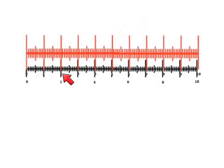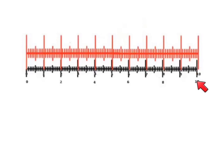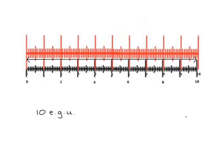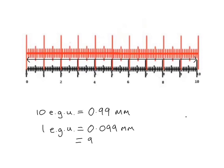You can use the small or large divisions, but here some aren't quite in line. We have to go all the way to the end until we see that the 10 mark on our eyepiece graticule lines up with a division on our stage micrometer. That means 10 eyepiece graticule units is worth 0.99 millimetres. From that we can work out what one eyepiece graticule unit is worth, and then convert that into micrometres.